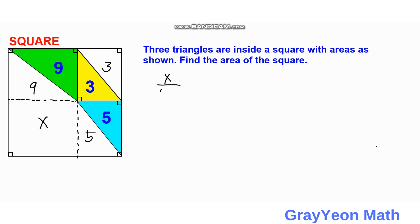We can say that x over 2 times 9 is equal to 2 times 5 all over 2 times 3. Or we can simply say that x is equal to 10 over 6 times 18. And that would be 18 divided by 6, which is 3. Then 3 times 10 is equal to 30. So we have the value for x as 30 square units.